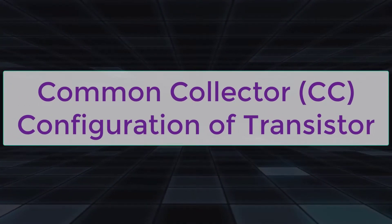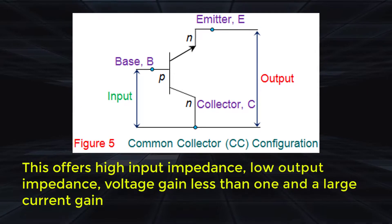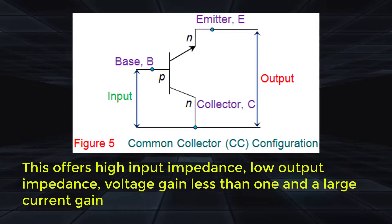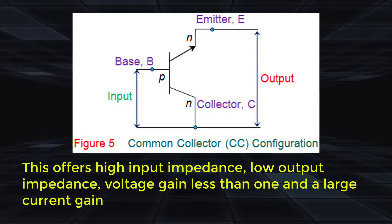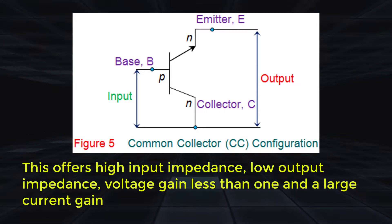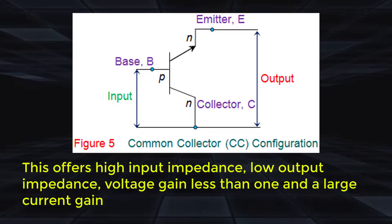Common collector CC configuration of transistor. This transistor configuration has the collector terminal of the transistor common between the input and the output terminals and is also referred to as emitter follower configuration.